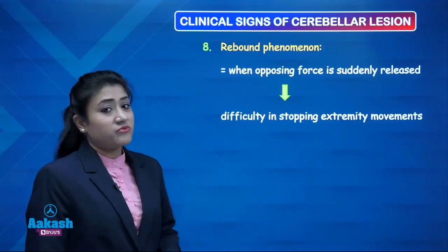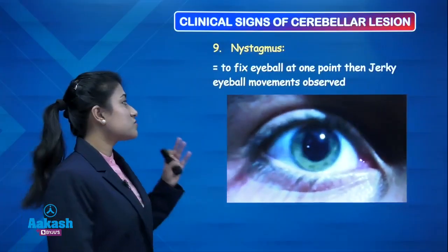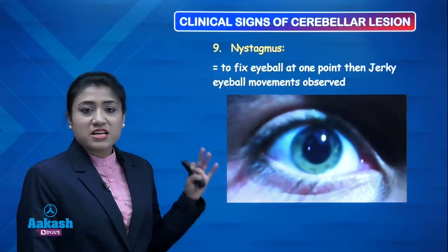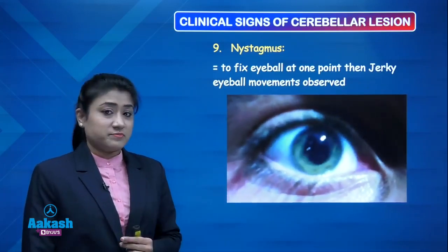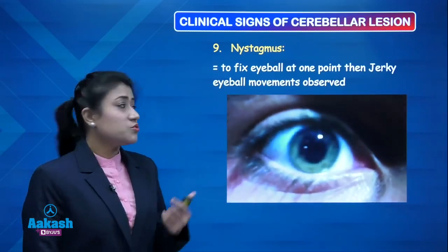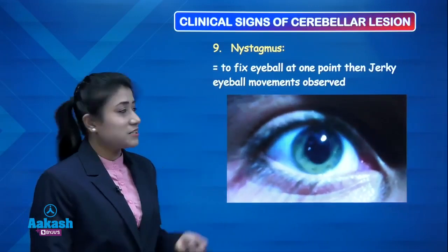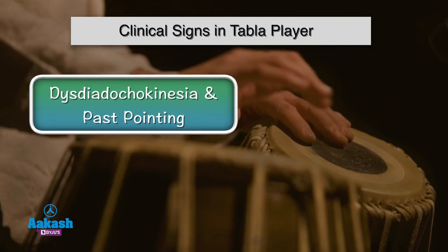Next is rebound phenomena — if you remove the opposing force suddenly, the patient has difficulty stopping the extremity movements. Then nystagmus is again a clinical sign: if you ask the cerebellar lesion patient to look at one point — to just fix the eyeball at one point — you will see jerky eyeball movement, which is nystagmus. Our tabla player was having dysdiadochokinesia and past pointing, so we suspected cerebellar dysfunction in him.